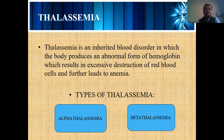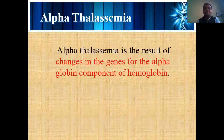There are two types of Thalassemia: Alpha Thalassemia and Beta Thalassemia. In this lecture, we are going to study details regarding Alpha Thalassemia. Alpha Thalassemia results when there are changes in the genes — specifically, the genes responsible for the synthesis of red blood cells.